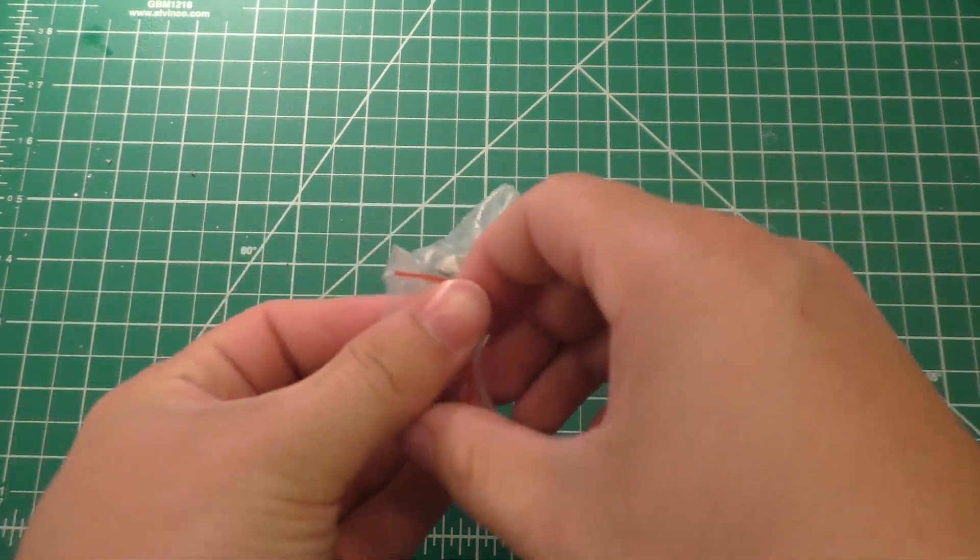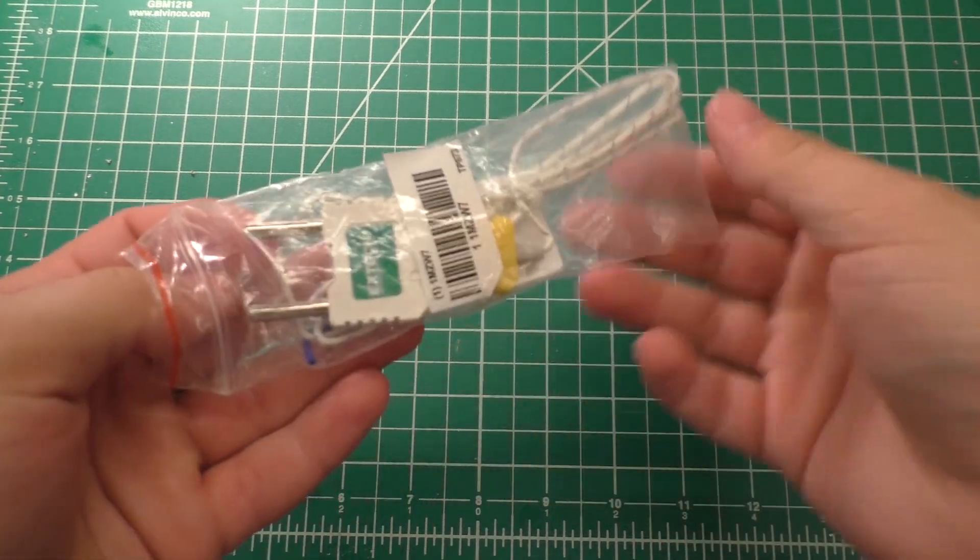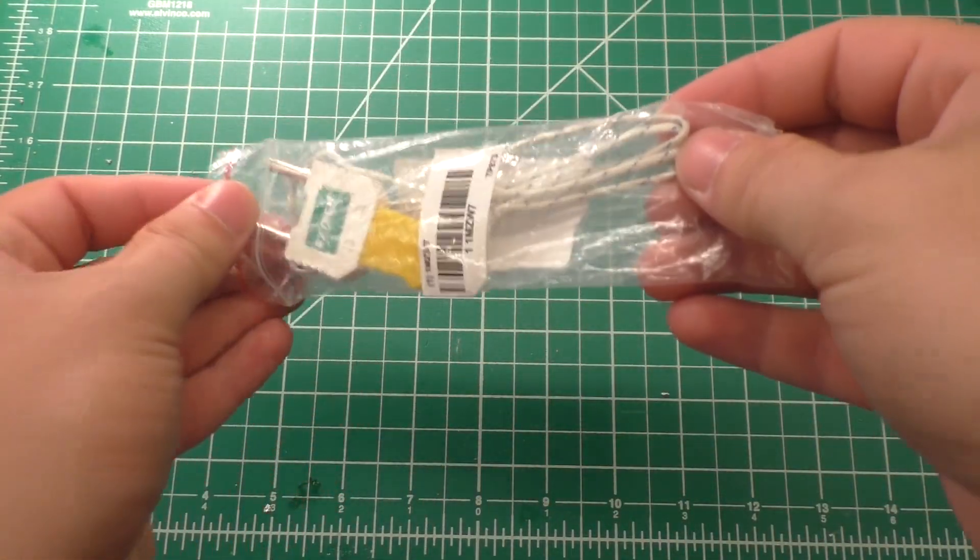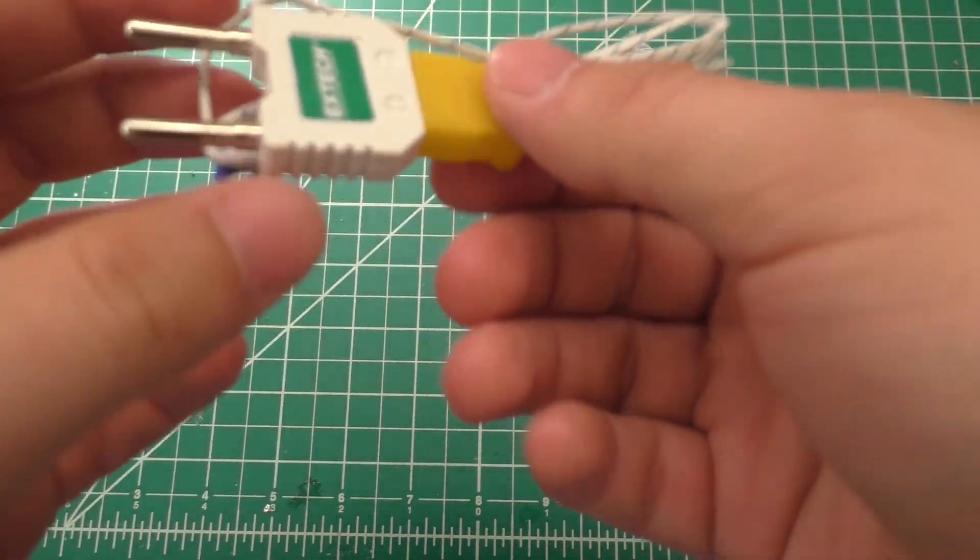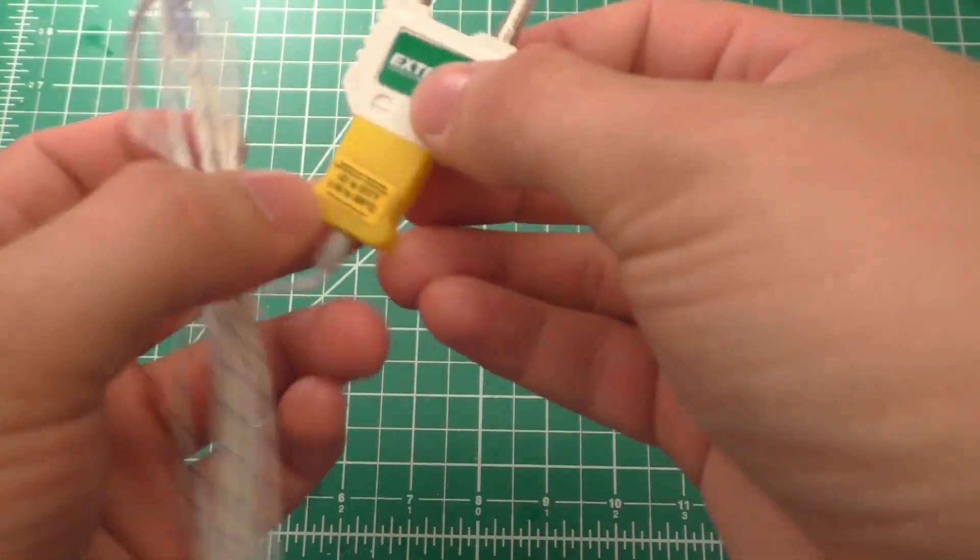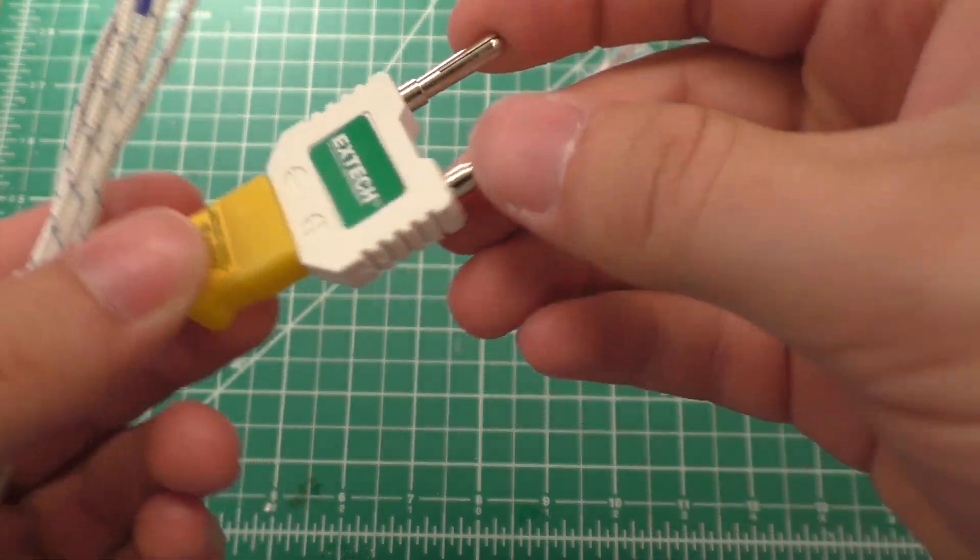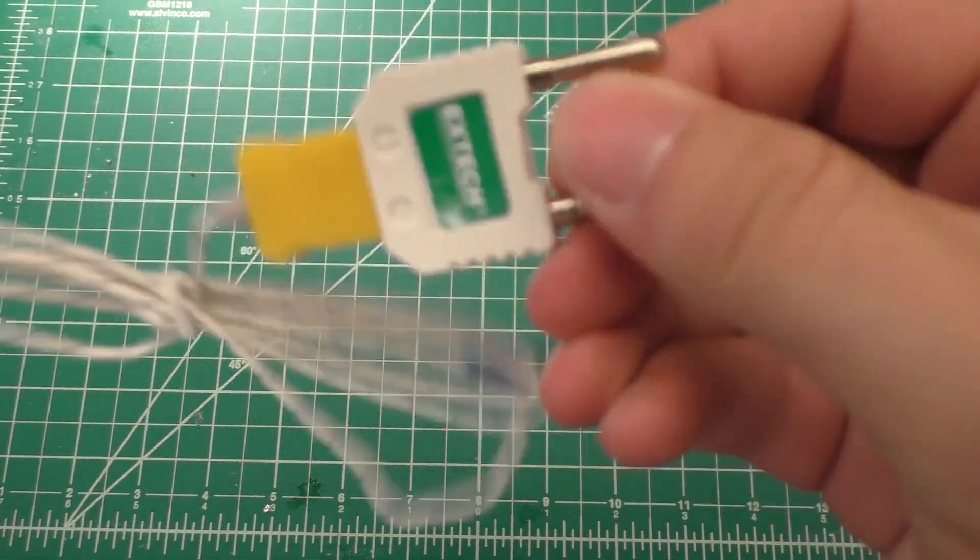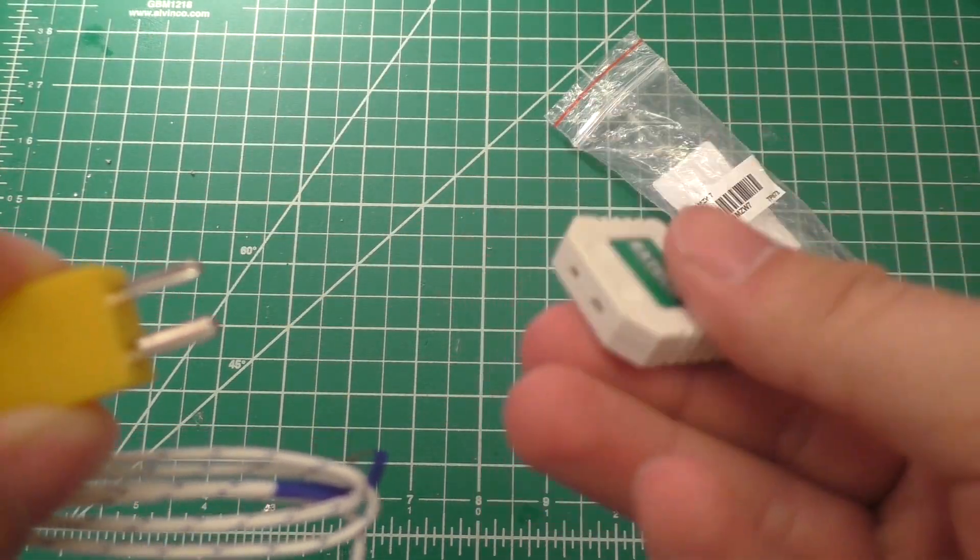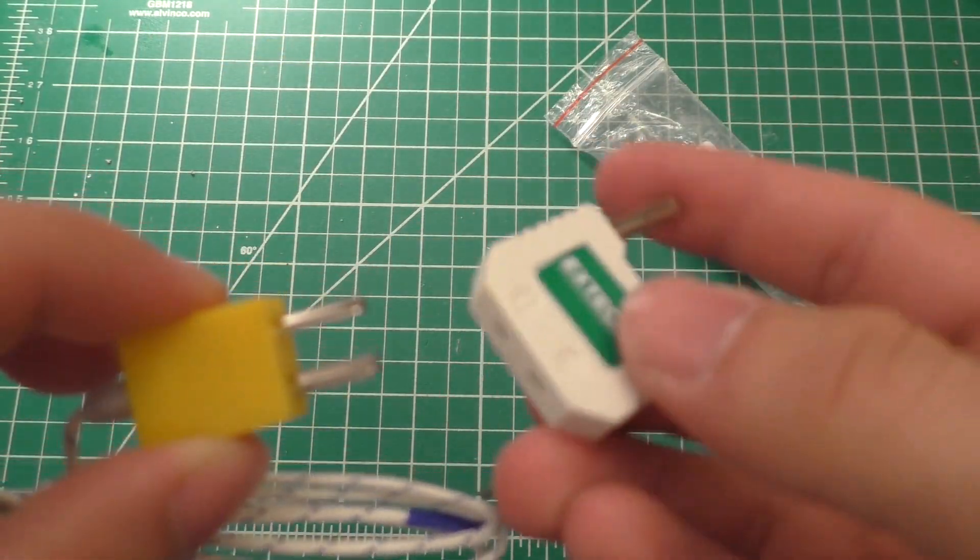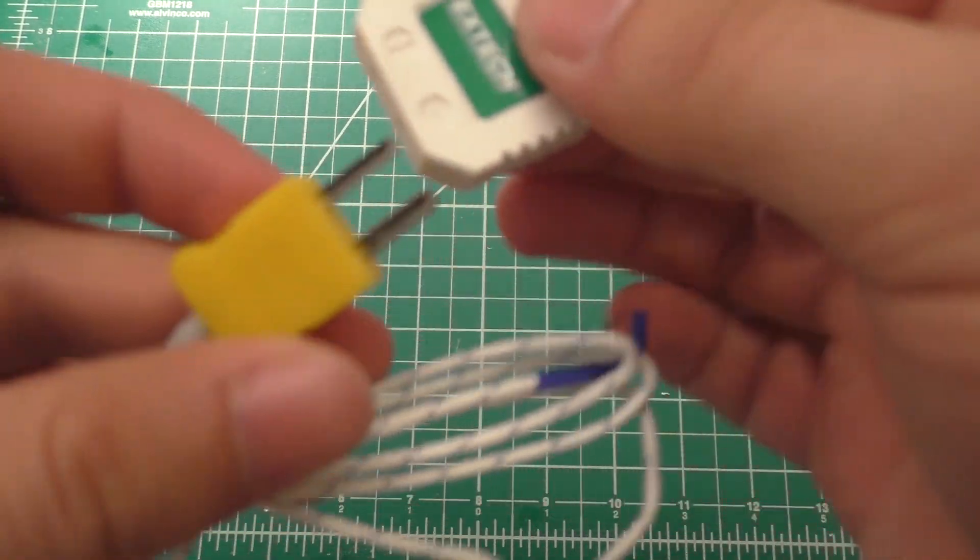Alright, so another thing is this thermal couple. And I bought this one specifically because for some reason I seem to be having a hard time finding a thermal couple that's actually meant for a multimeter. So in other words, a thermal couple that has this kind of spacing on it.